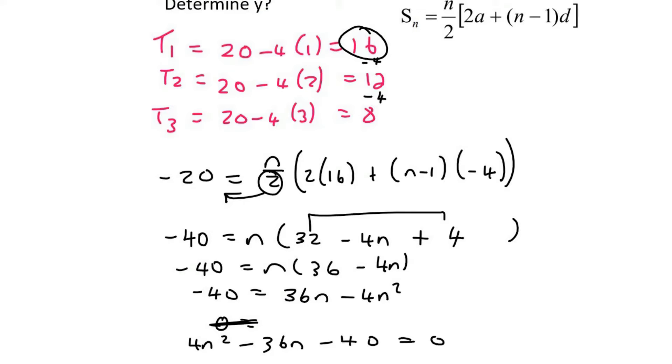I would just use the quadratic formula here. You can try to factorize if you want, but I just like to use the formula. And so what we find is that n is 10, or n is minus 1. Now, you can't have a negative position, so this will be no solution.